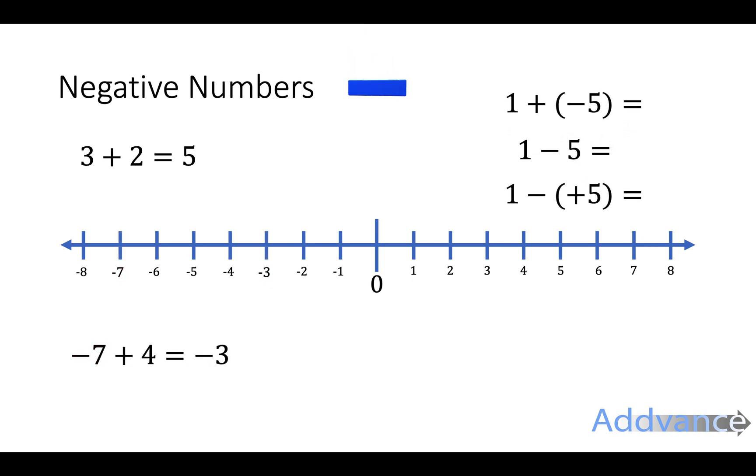1 minus 5 is now subtracting a number and this is the same as 1 plus minus 5 or 1 minus plus 5. So if you ever see it written with brackets or with a positive and negative, a negative and a positive, it just means subtract.